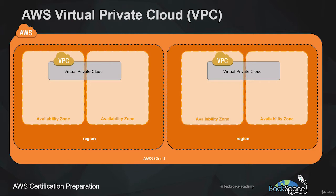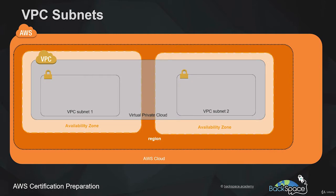We can also create additional virtual private clouds for additional private spaces within the AWS cloud, which provides good advantages from a security perspective. A VPC contains subnets, and we need at least one subnet to launch an EC2 instance, but we can have multiple subnets across multiple availability zones. When we ran our WordPress application, it was launched into a default public subnet created for us by AWS.